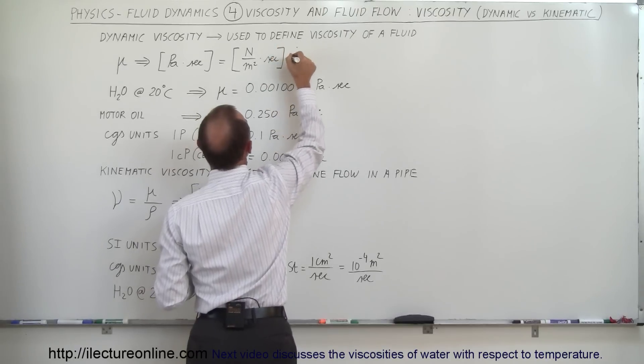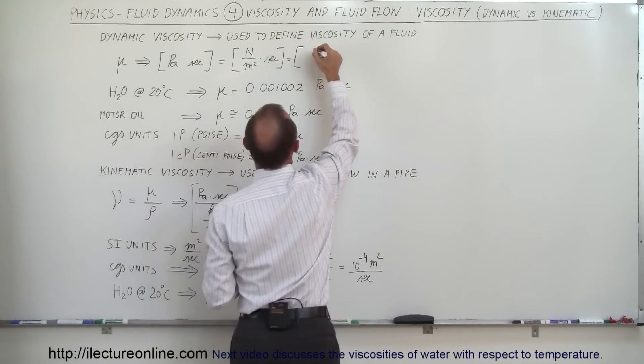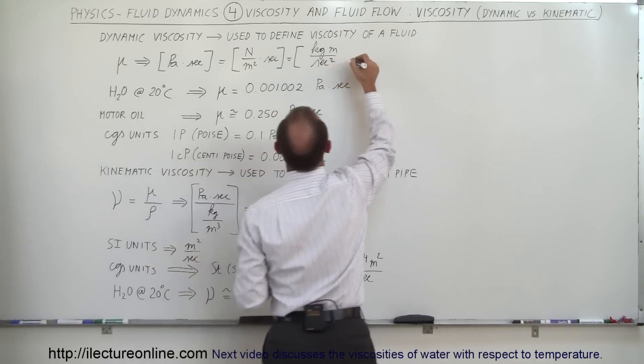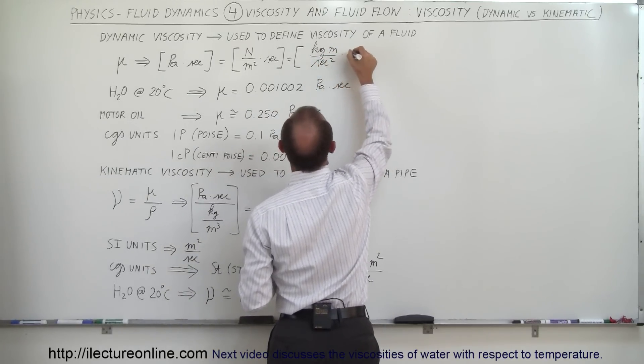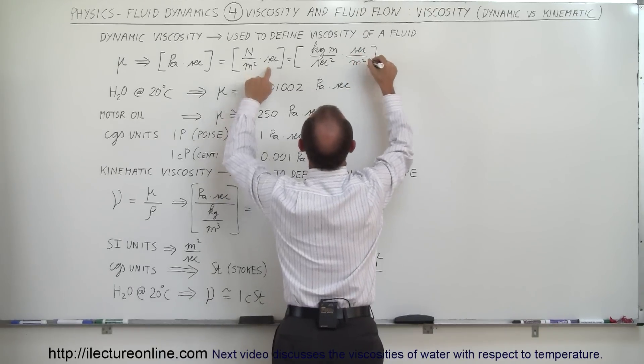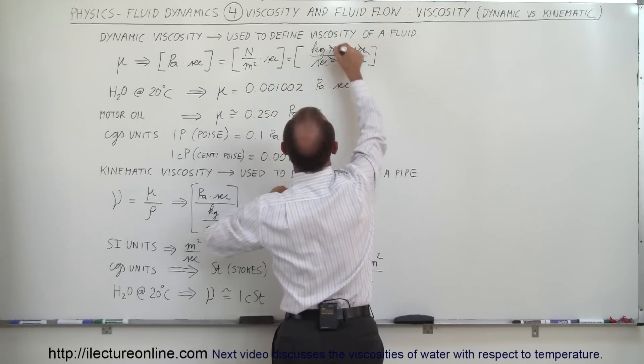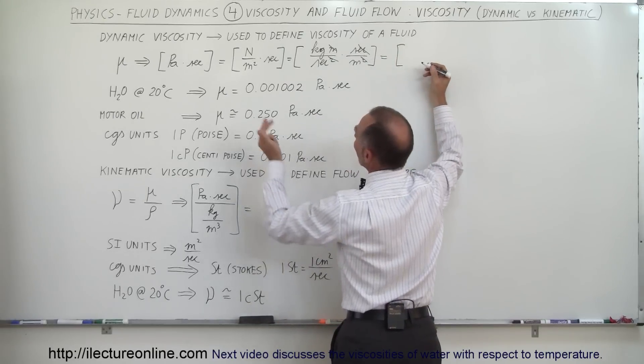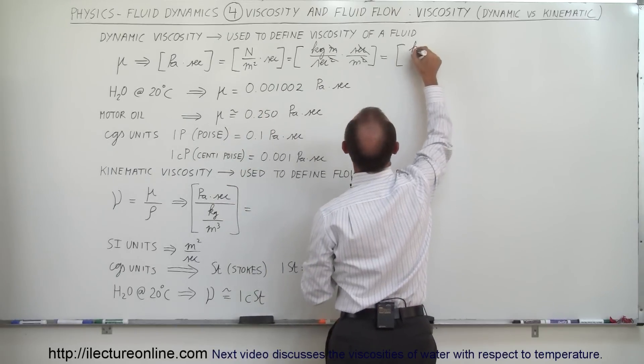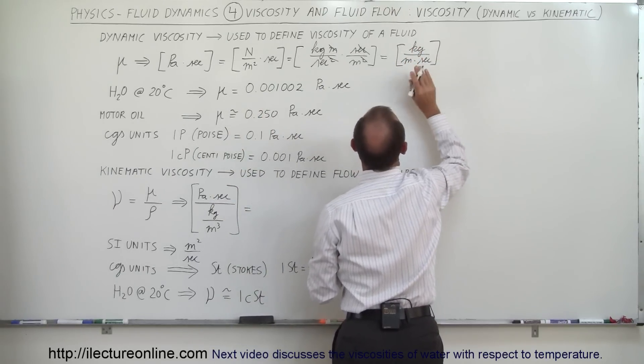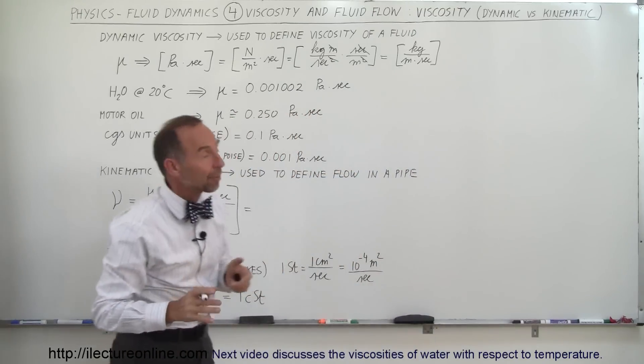And a newton, well, that's units of force, which would be kilograms, meters per second squared, times seconds, divided by meters squared. And if we simplify that, this cancels out with that, that cancels out with that. We end up seeing that the units, pascals times seconds, is the same as kilograms per meter times seconds. So those are the units for what we call dynamic viscosity.